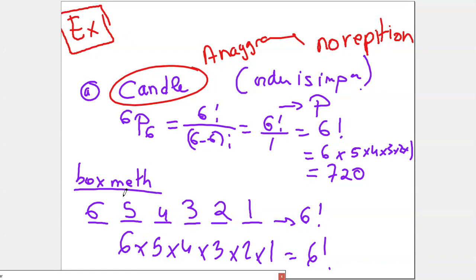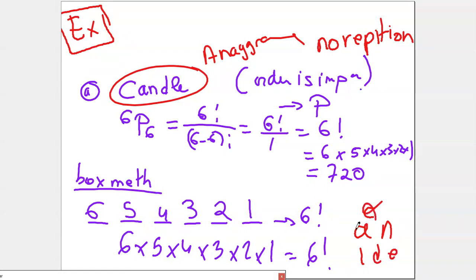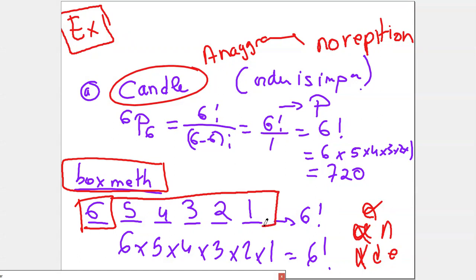Using the box method for the word CANDLE: you have six places. For the first place, how many possibilities? Six letters, so six possibilities. I took a letter, so for the second place I have five, then four, three, two, one. So it's 6 times 5 times 4 times 3 times 2 times 1 — that's factorial 6. The box method is much easier and less complicated than the formula. You can use either method.